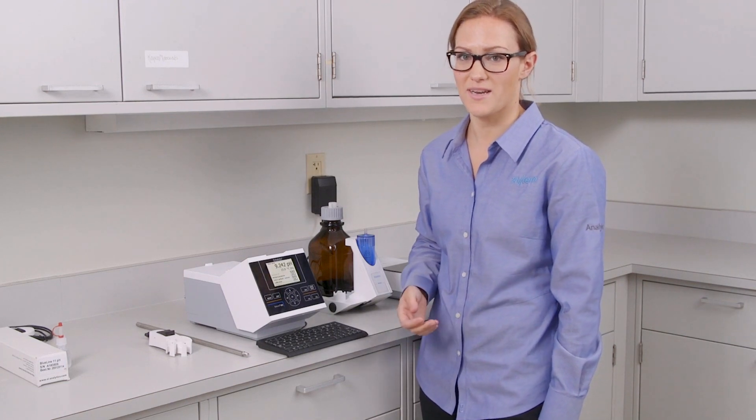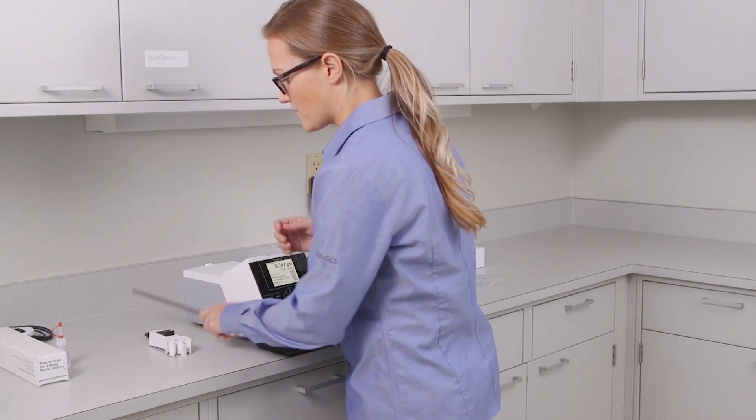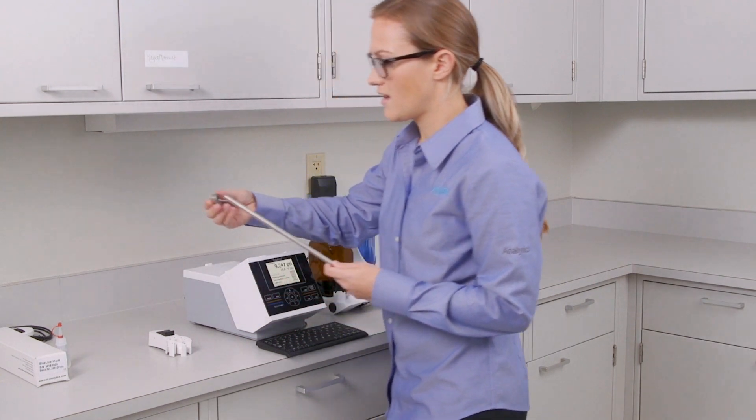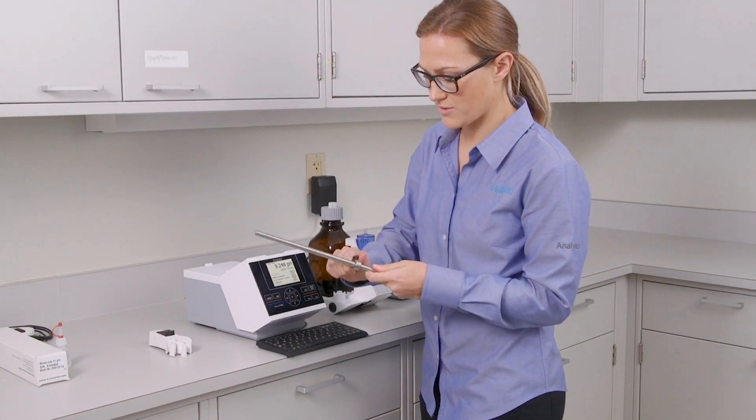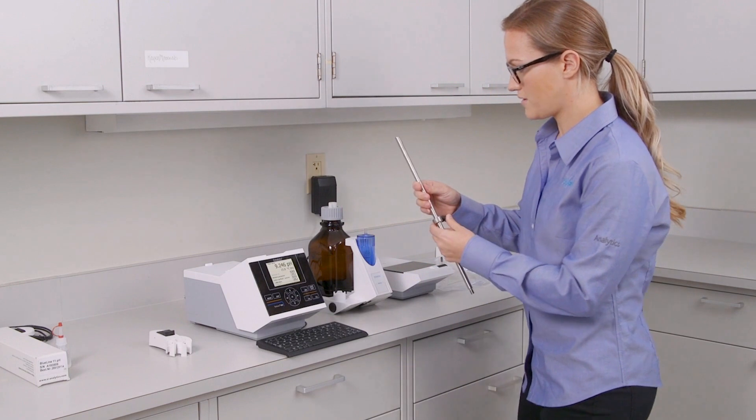Just a few more steps to get the magnetic stirrer set up. So you'll take your stainless steel rod and the clamp and just put it right over and secure it in place.